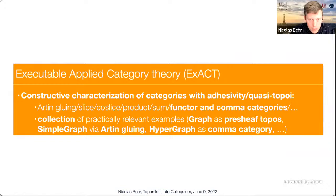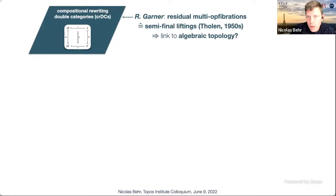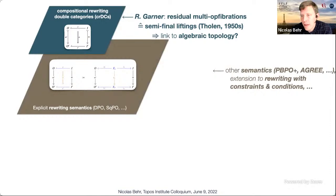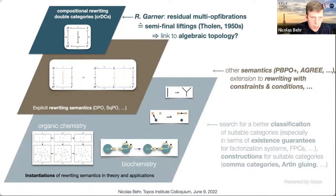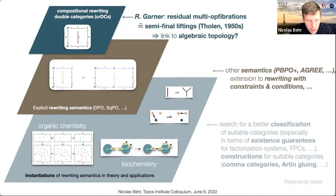There are other semantics besides DPO and SqPO — rewriting with conditions still needs to be fully formalized in double categories. This paper is 86 pages with about 70 references; it was a lot of work to find the pieces, from very fundamental things like factorization systems to very specialized things like when does a quasi-topos admit such factorization systems. I'm pretty sure we could profit greatly from speaking to experts in ACT, and that would be a wish for this project.